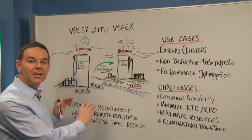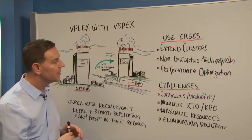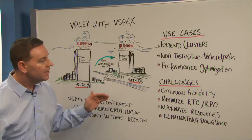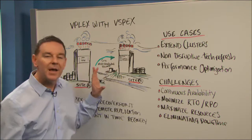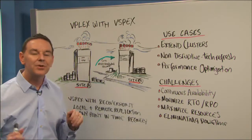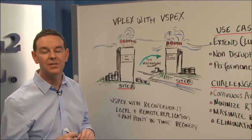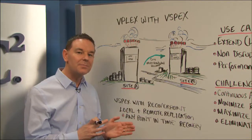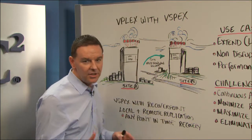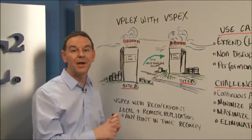Some ideal use cases for vPlex include extending clusters — for example, if you've deployed SQL or Oracle and want it active-active, available at both sites at the same time, this is a great solution. Non-disruptive tech refresh is another great application for vPlex. For customers who have deployed a private cloud with Microsoft Hyper-V, VMware, or vSphere, if there's an outage and a virtual machine must move via vMotion or live migration, you'll incur a performance hit. With vPlex, that performance hit is eliminated.